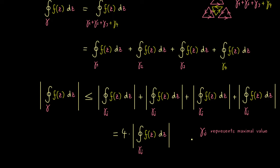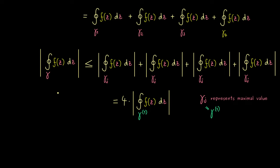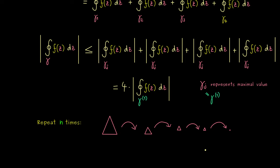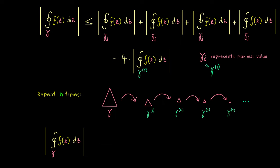To simplify notation, let's rename this gamma_j as gamma with upper index 1. We can now repeat the whole procedure for the smaller triangle gamma^1, and repeat this process exactly n times — each time the triangles get smaller and smaller, while the calculation stays valid at each step. Using the naming convention where gamma^n denotes the new smaller triangle at step n, we obtain: the original integral is less than or equal to 4^n times the absolute value of the contour integral along gamma^n. Let's call this formula star.